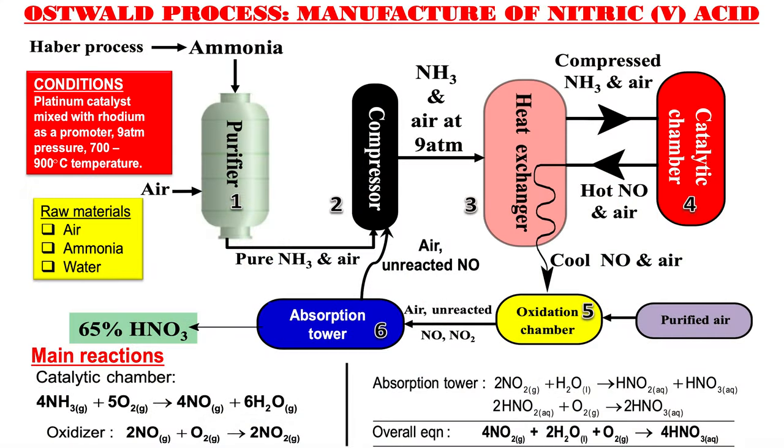In our last lesson we discussed gas preparations, including laboratory preparation of ammonia. Here we are looking at ammonia on large scale, meaning the uses of ammonia on large scale are the same as discussed under industrial chemistry. The next industrial process is called the Ostwald process. The Ostwald process is used in the large-scale manufacture of nitric acid. When discussing preparation of gases, we also looked at laboratory preparation of nitric acid, and here we are looking at large-scale manufacture.